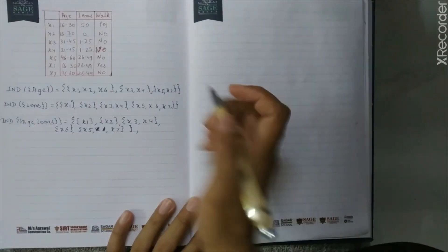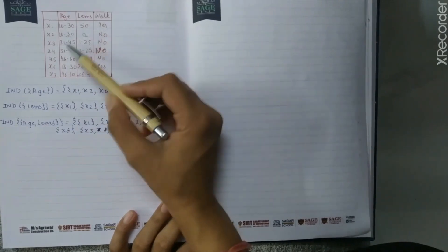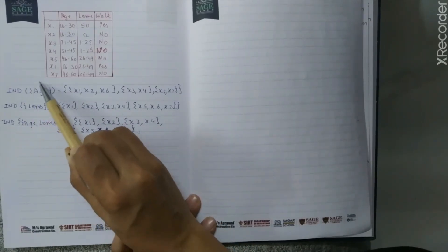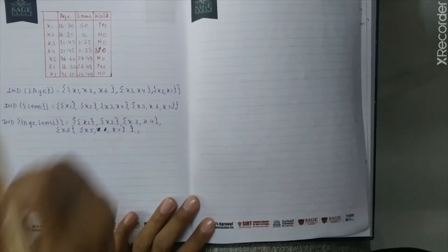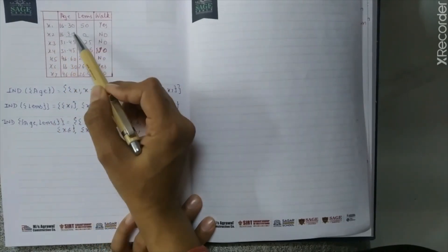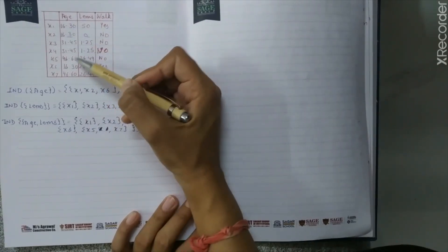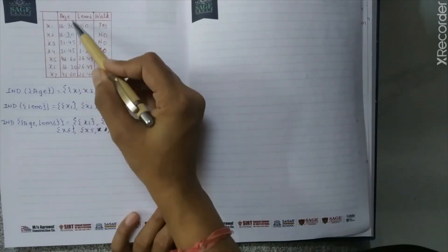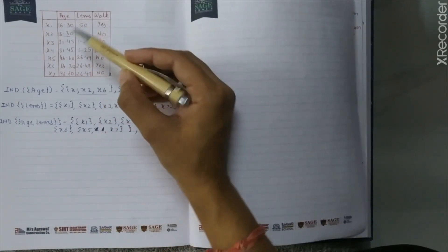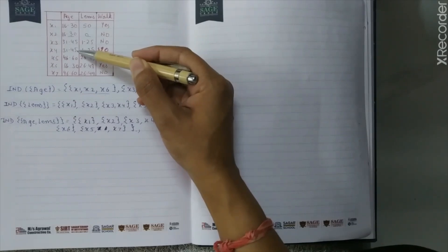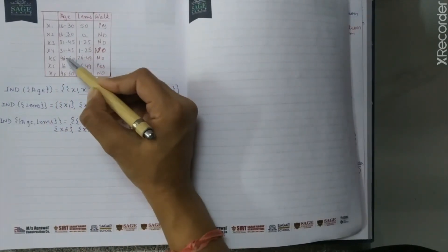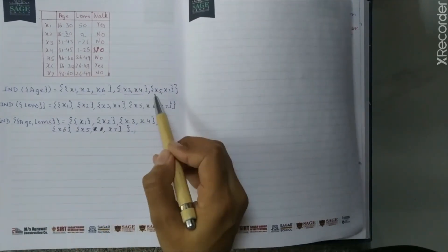Let's take an example. We have an information system table, and we will compute the indiscernibility relation, denoted IND. First, for the age attribute: the value of x1 is 16–30; the value of x2 is 16–30; the value of x6 is 16–30 — so x1, x2, and x6 are grouped together. The value of x3 is 31–45 and x4 is 31–45 — so x3 and x4 go together. The value of x5 is 46–60 and x7 is 46–60 — so x5 and x7 are grouped together.